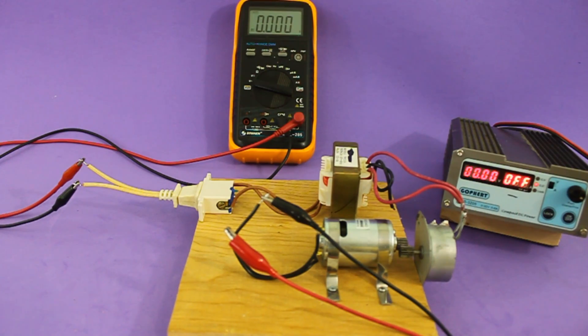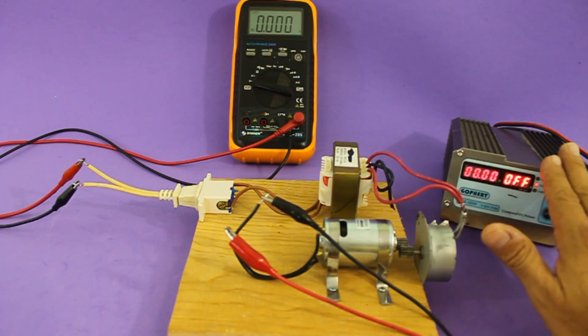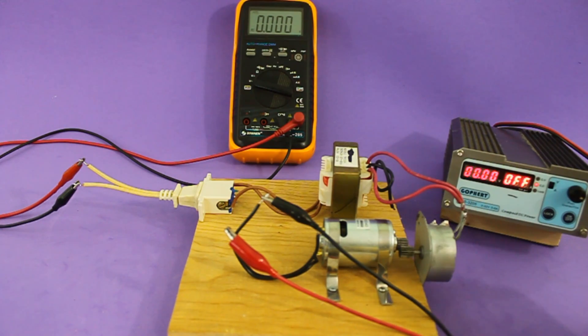I am going to adjust the input voltage that goes to the motor in order to adjust the output to around 120 volts, which is the household voltage.